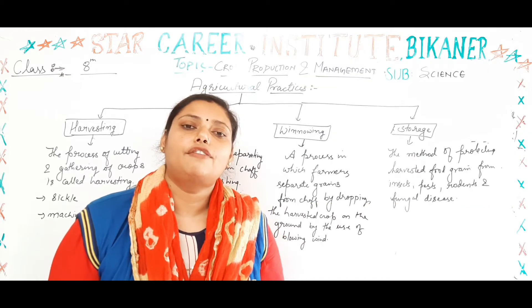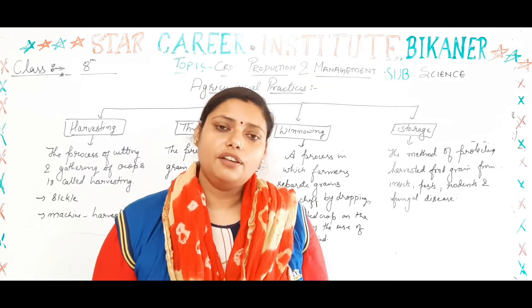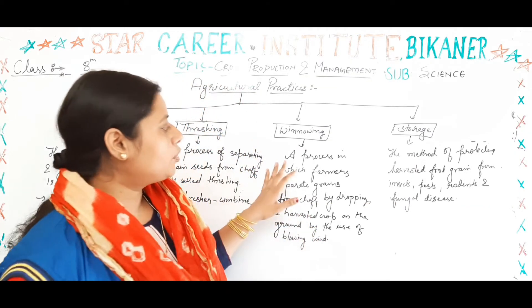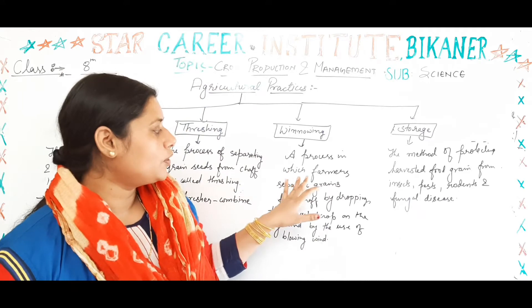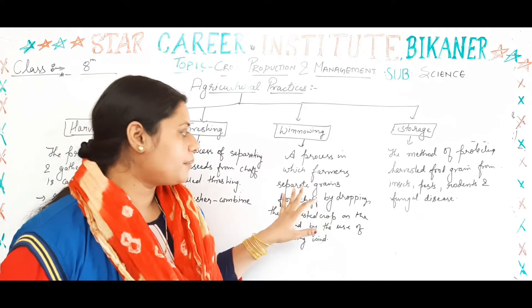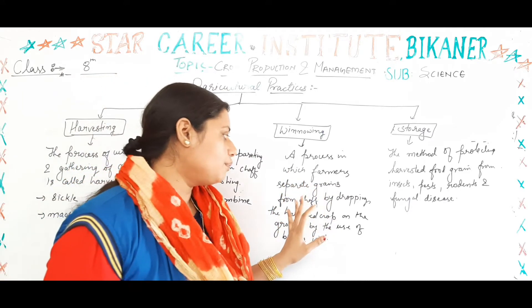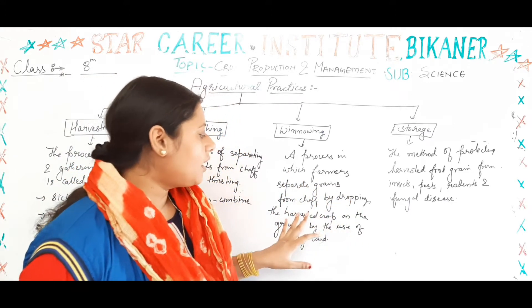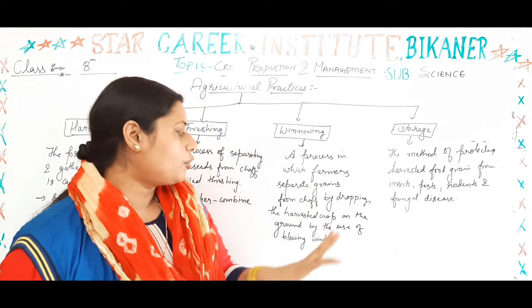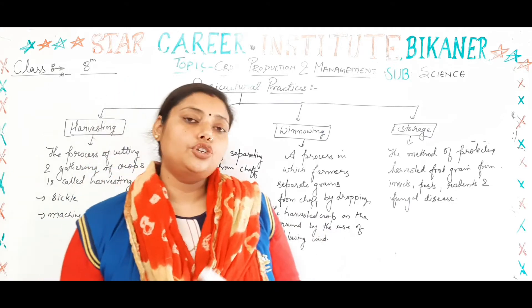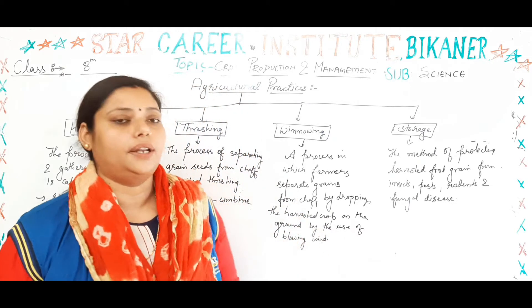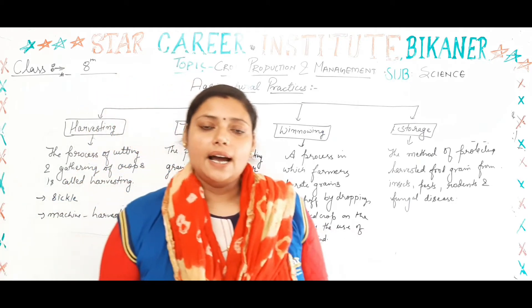Then we talk about winnowing. Winnowing is the process in which farmers separate grains from chaff by dropping the harvested crop from a height and using the blowing wind to carry away the lighter chaff.